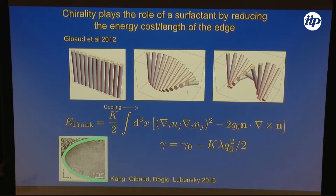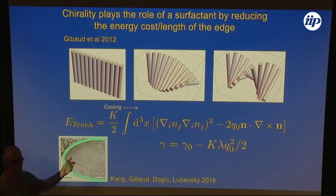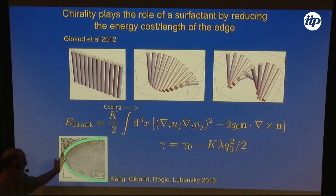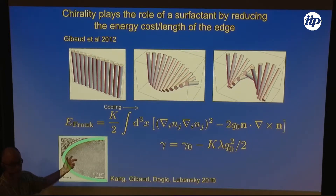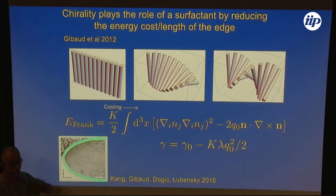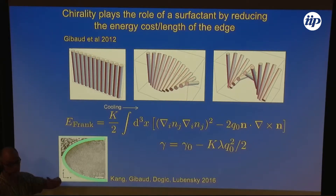There's always a cost. Even if they're not chiral, they're still twisted. So there's a cost to having the edge, and the more of this you have, you're going to have more rods that are twisted, so there'll be a positive energy cost.